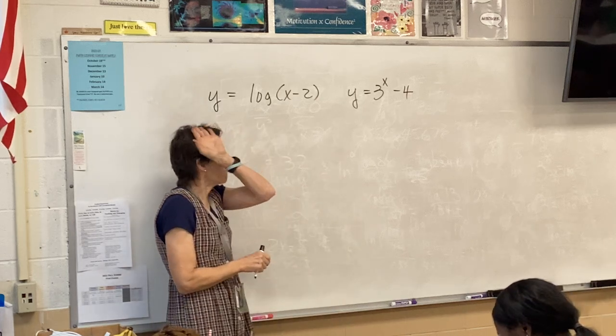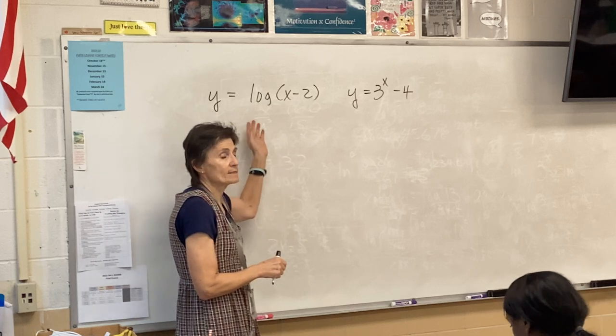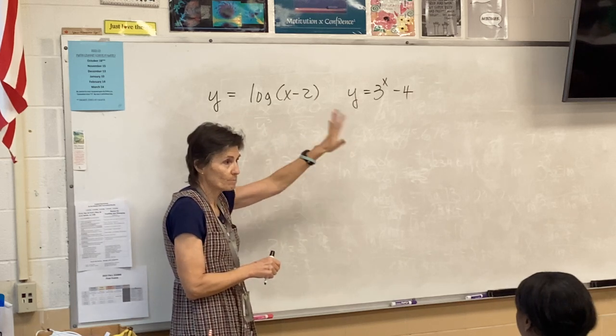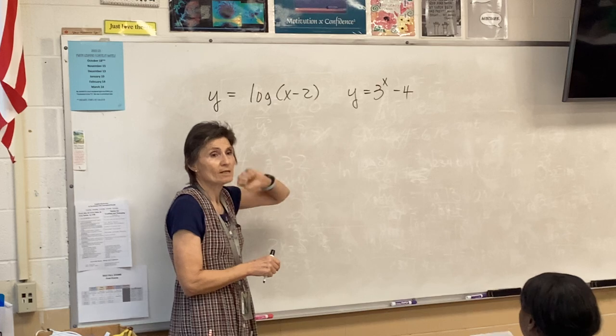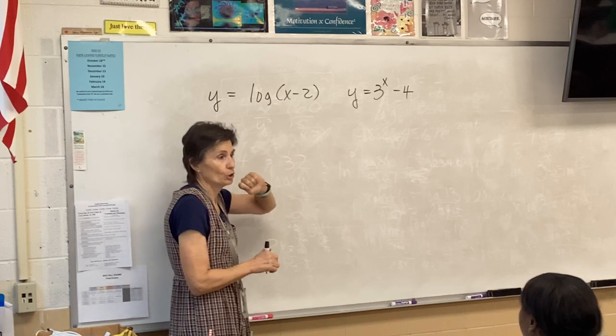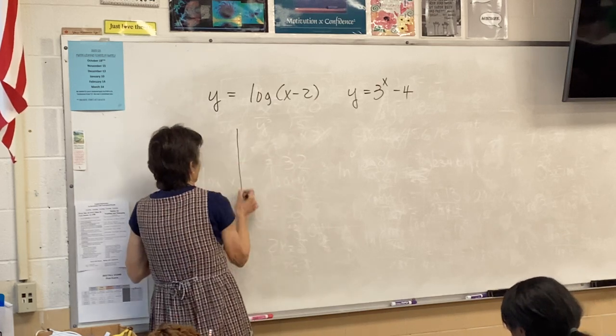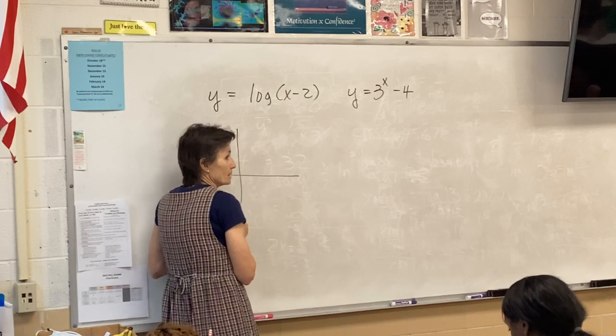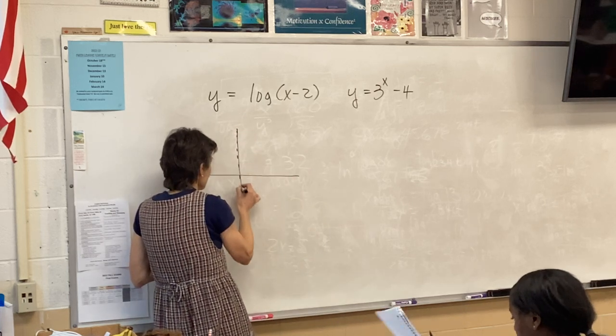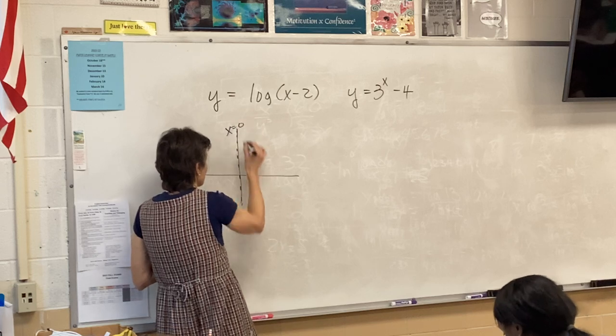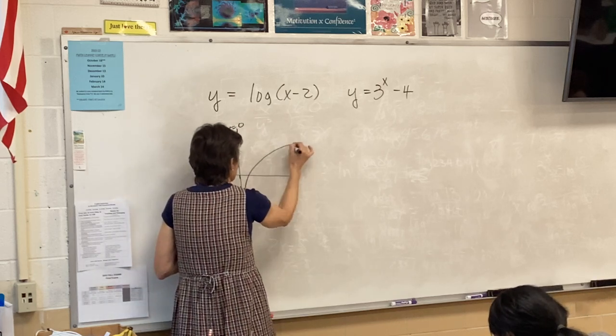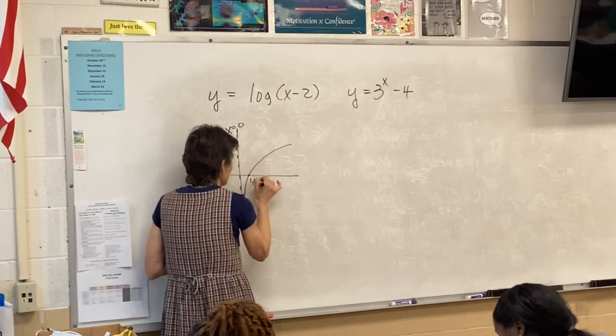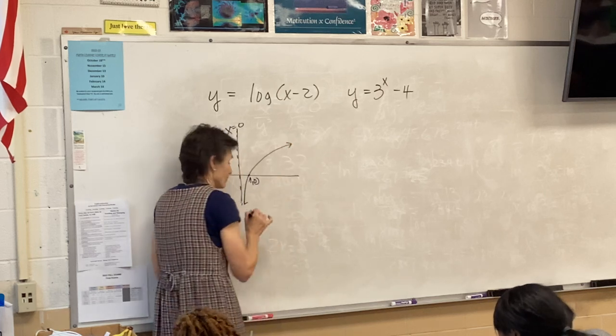Dig back into that memory bank, what does the logarithmic function look like? It is the one that has an asymptote here and goes through the point 1, 0. This is your logarithmic curve, remember that?